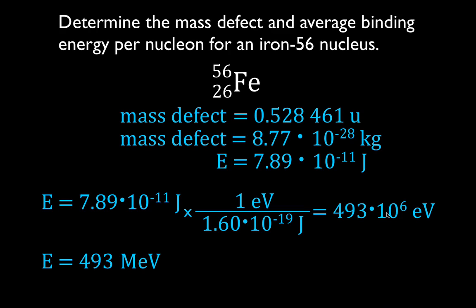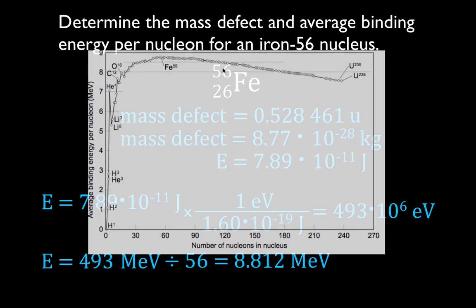That 493 MeV is the total binding energy for iron-56 when all those protons and neutrons are put together. Usually it's expressed per nucleon. Since iron-56 has 56 nucleons, we divide 493 by 56 and get 8.812 mega electron volts per nucleon.